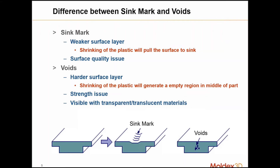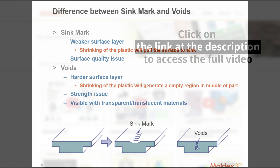So what causes these sink marks and voids? Both of them are caused by non-uniform cooling and shrinkage of a thick wall section compared to a thinner or nominal wall thickness of a molded part. Sink marks are formed when there's a weaker surface layer and the surface will actually pull inward towards the thicker wall, and that forms the depression at the part surface.